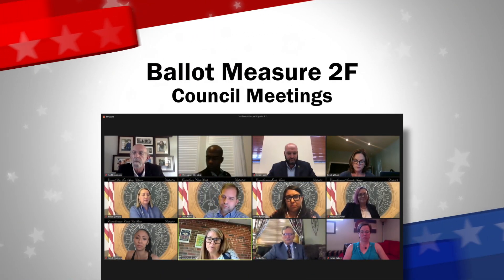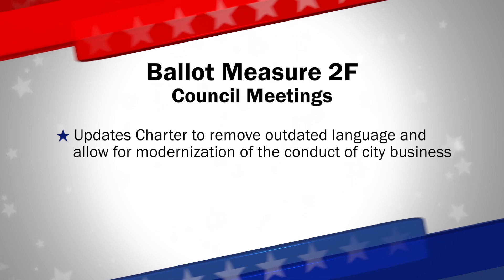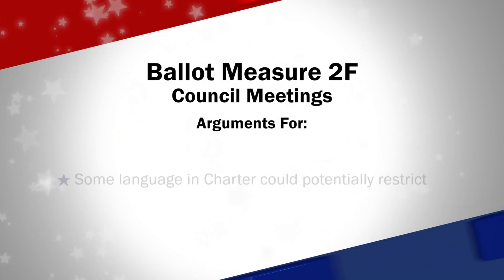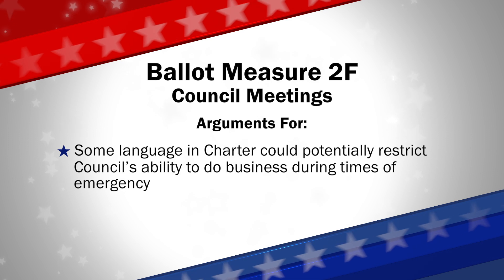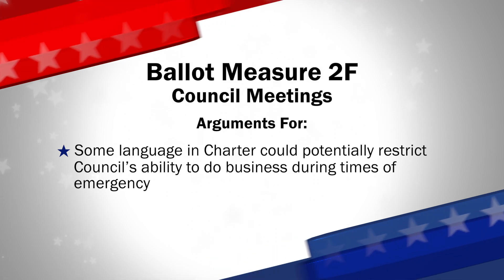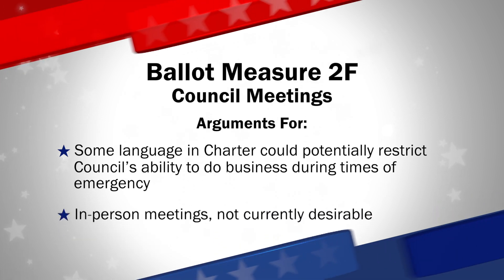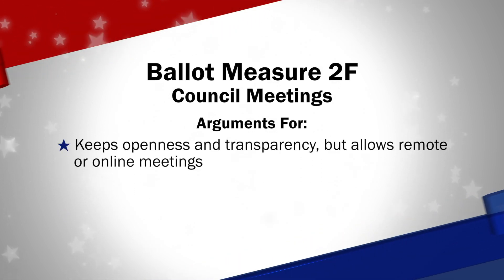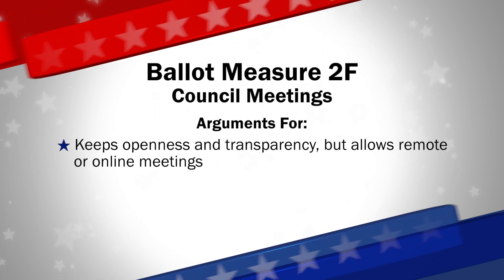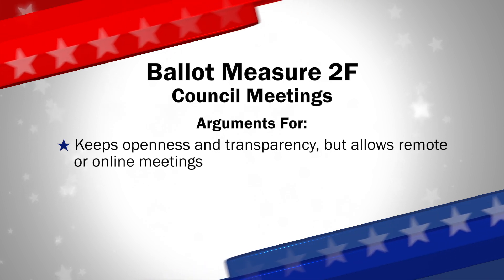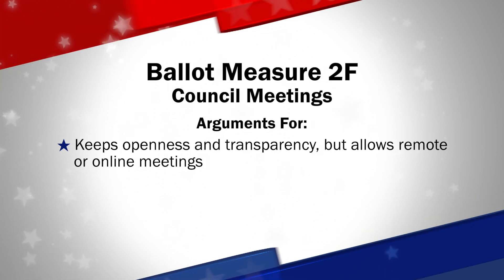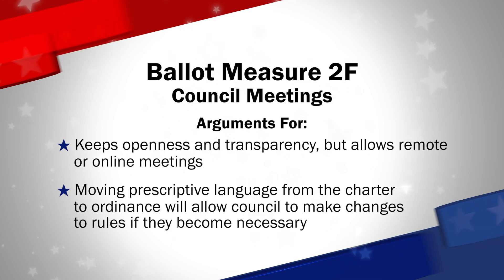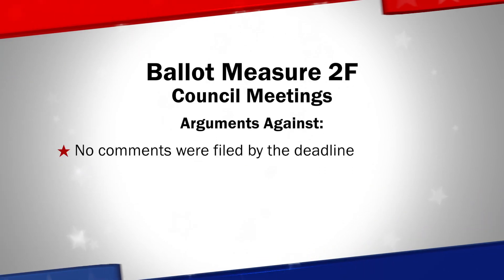Next up is 2F, which asks if the city charter be updated to remove outdated language and allow for modernization of the conduct of city business. During the COVID-19 emergency, it became clear that some language in the Denver charter could potentially restrict council's ability to do business during times of emergency. This charter change would keep the requirements of openness and transparency but would allow for remote or online meetings. Meetings would still be fully recorded and all records would remain available. Moving prescriptive language from the charter to ordinance will allow council to make changes to rules if they become necessary. No opposing comments were filed by the deadline.